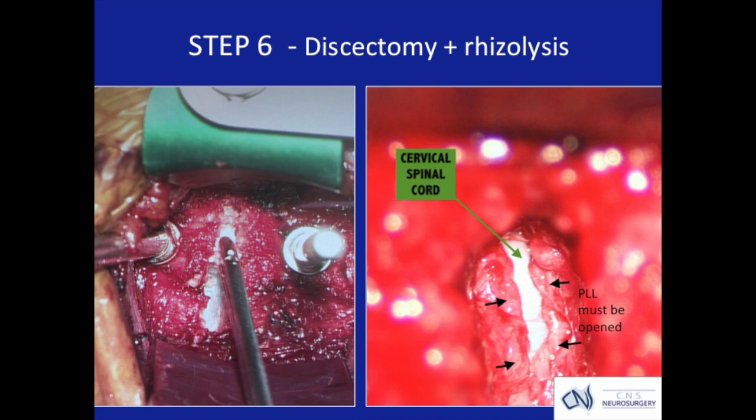In step six, on the left is the actual discectomy image under the operating microscope, and on the right is the spinal cord in the cervical spine — clearly visible as the white area in the center of that image — once the thickened ligament around the spinal cord has been opened up.